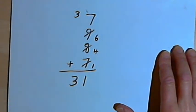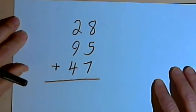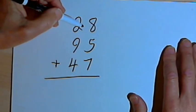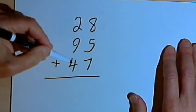So that's the basic process. Let's try that, adding two-digit numbers. So here I want to add 28, 95, and 47.